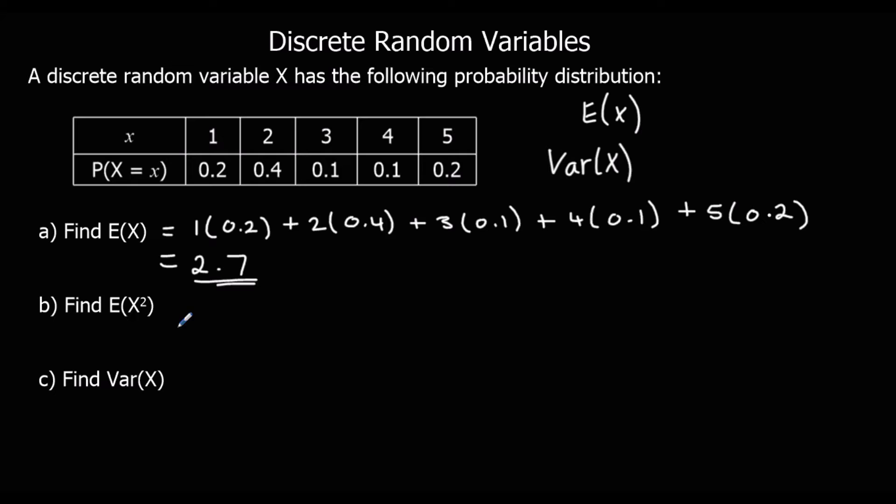Now we're going to work out the expected value of X squared. So if all the X's were squared, what would the mean be? What would the expected value be? It's 1 squared times the probability, 2 squared times the probability, 3 squared times the probability, 4 squared times its probability, and 5 squared times its probability.